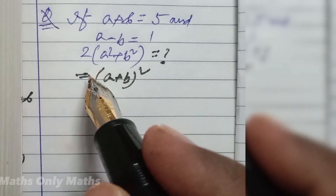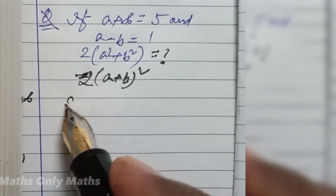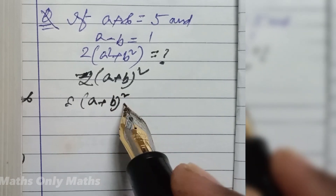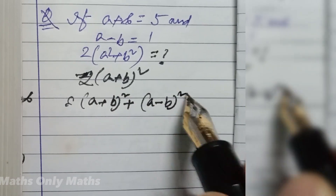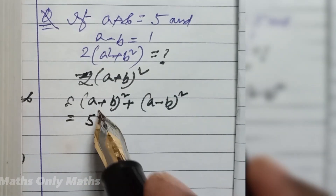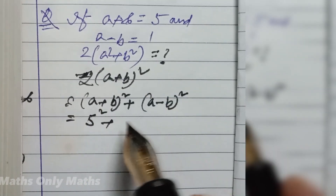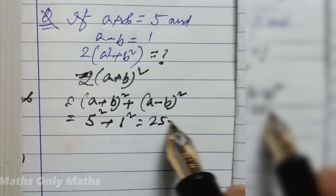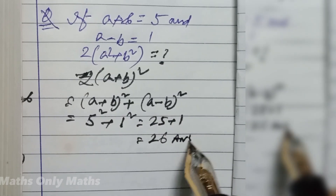The formula of 2 into a square plus b square is a plus b whole square plus a minus b whole square. a plus b is 5, so 5 square plus a minus b is 1, so 1 square gives us 25 plus 1, which equals 26. That is the answer.